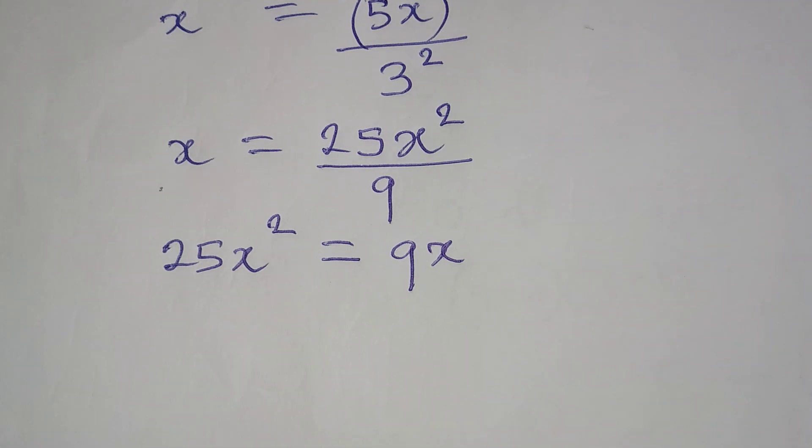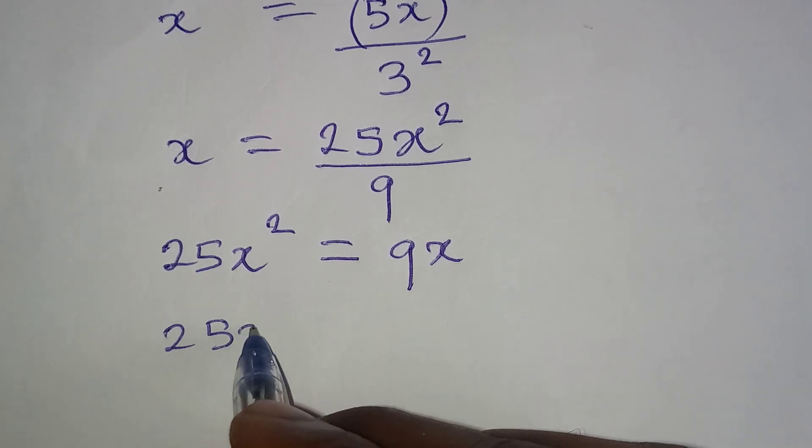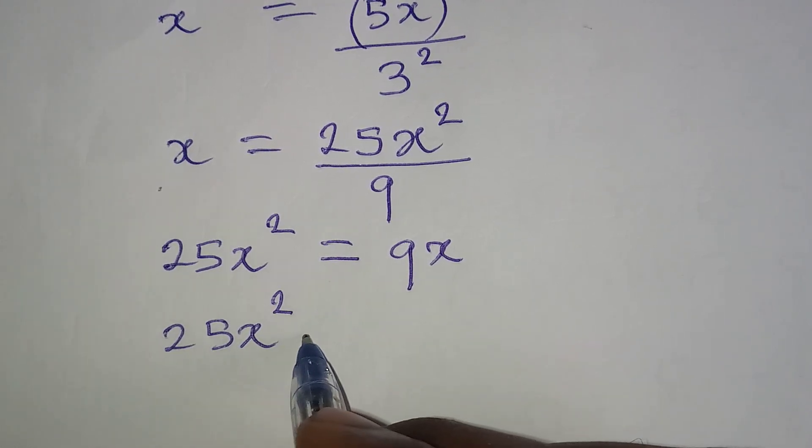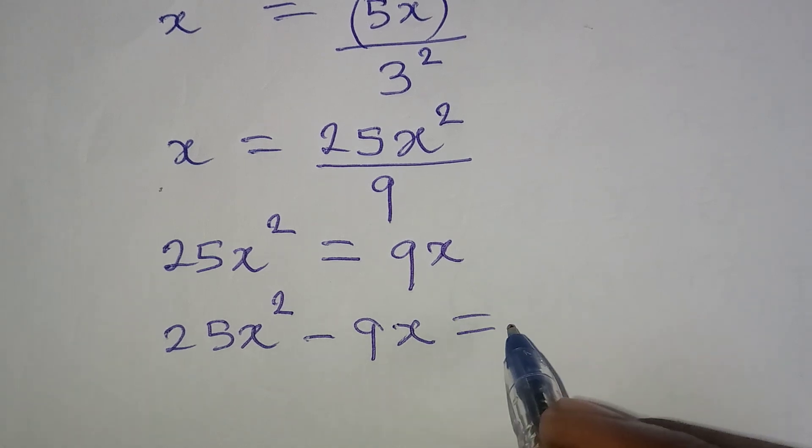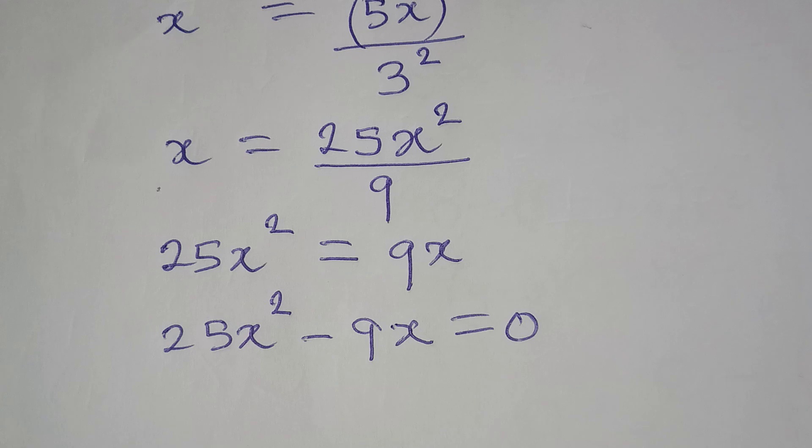Now, bring everything to the left. So I'm going to have 25x squared minus 9x equal to 0. And now, we have a quadratic equation.